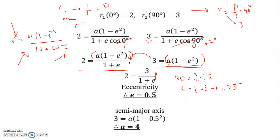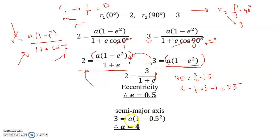To calculate the semi-major axis A, we use this equation — substituting the eccentricity e = 0.5 — to obtain the value of A.